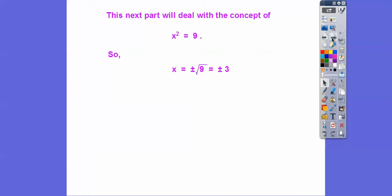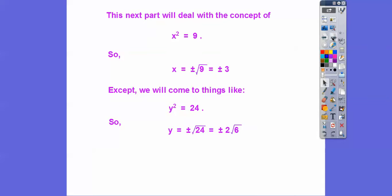This next part deals with the concept of when we have a quadratic equation. Say we had x squared equals 9 — x would be both 3 and negative 3, since 3 squared and negative 3 times negative 3 both equal 9. So when we have x squared equals a number, it's always plus or minus the square root. For example, y squared equals 24 gives y equals plus or minus the square root of 24. Since 24 is 2 times 2 times 2 times 3, a pair of 2's come out, giving plus or minus 2 root 6.